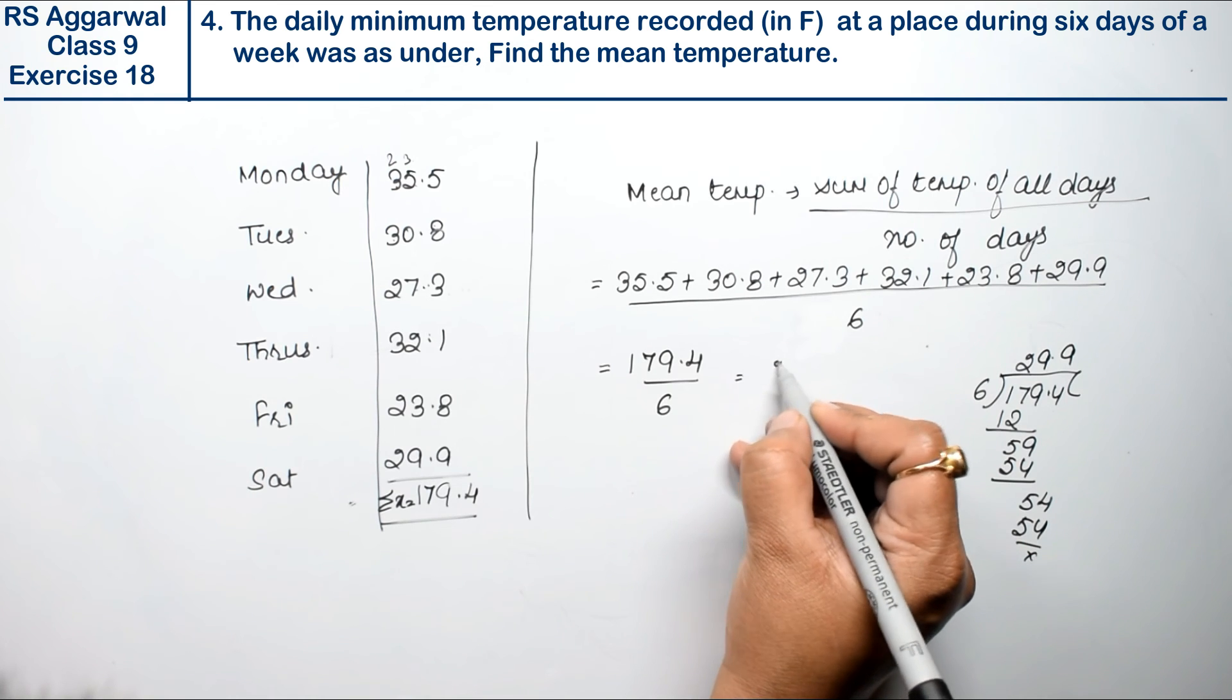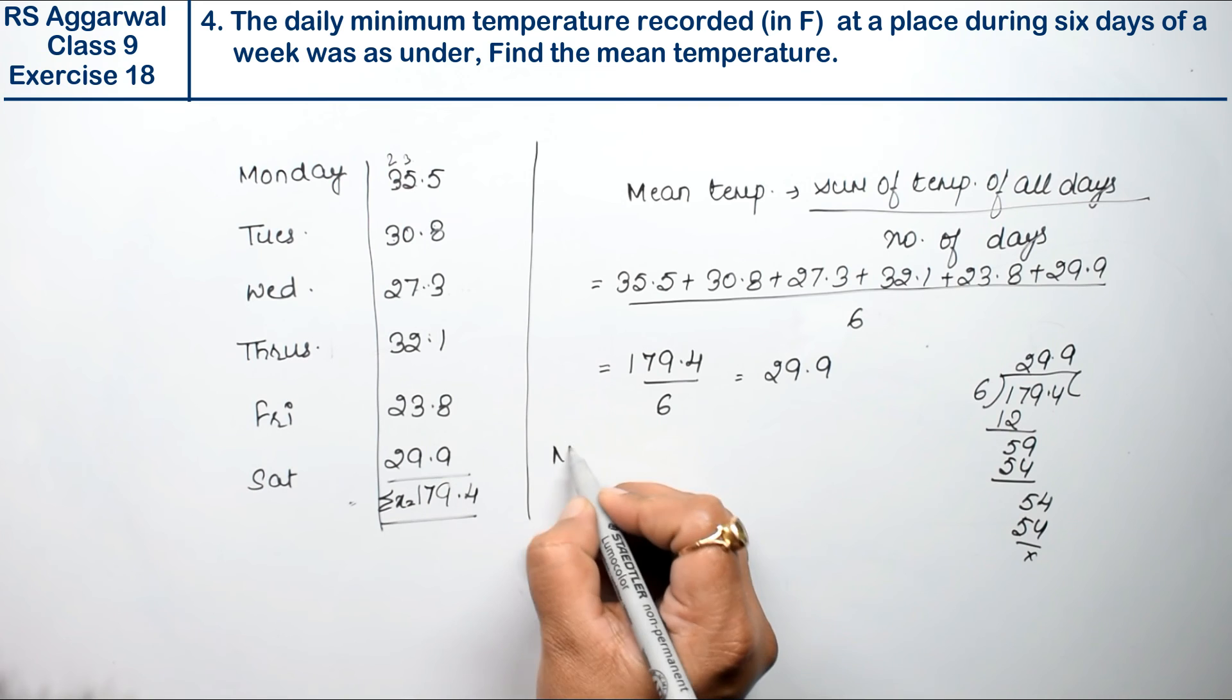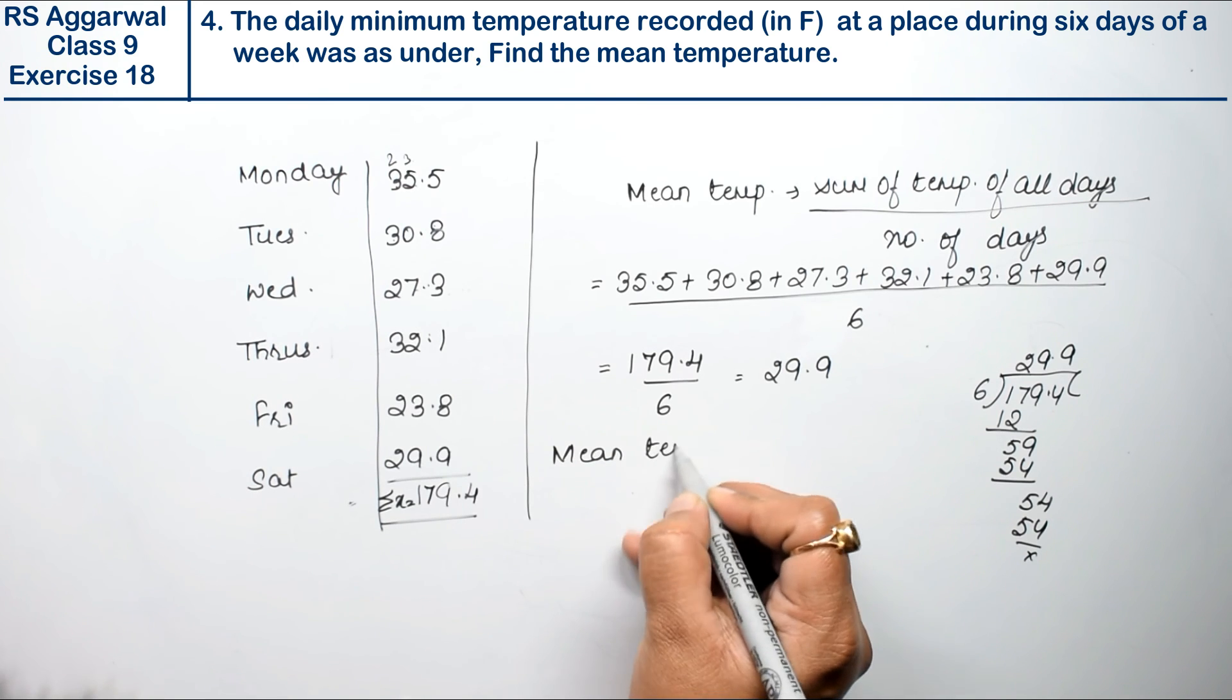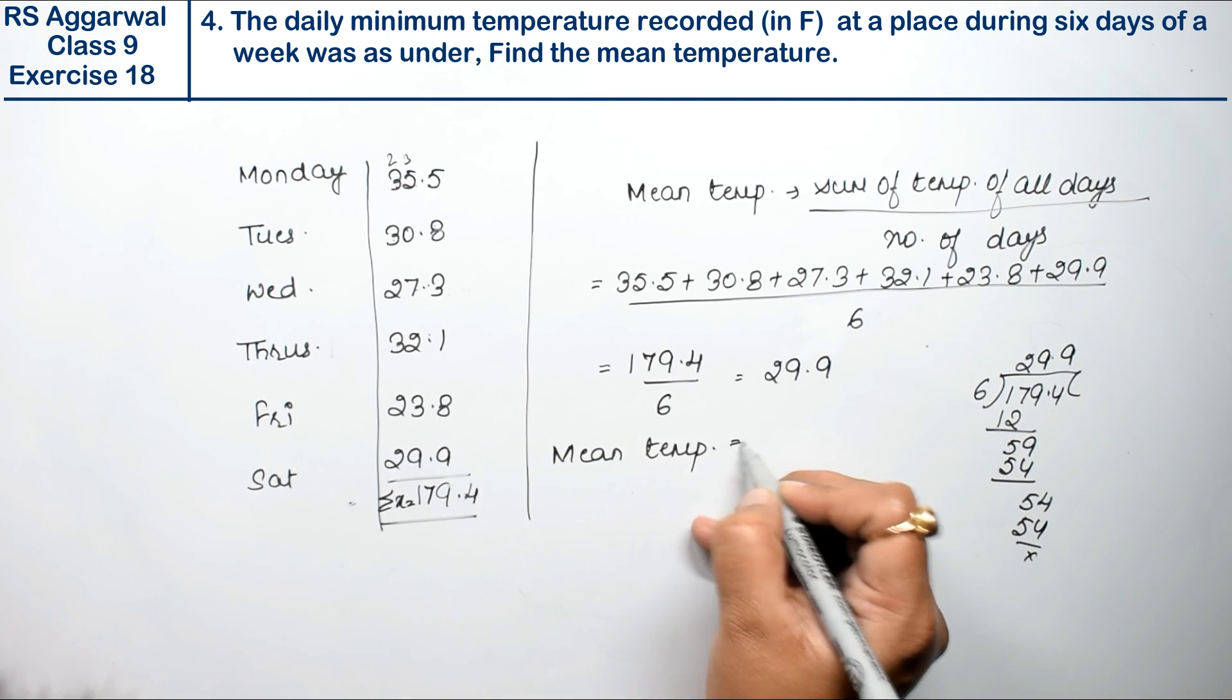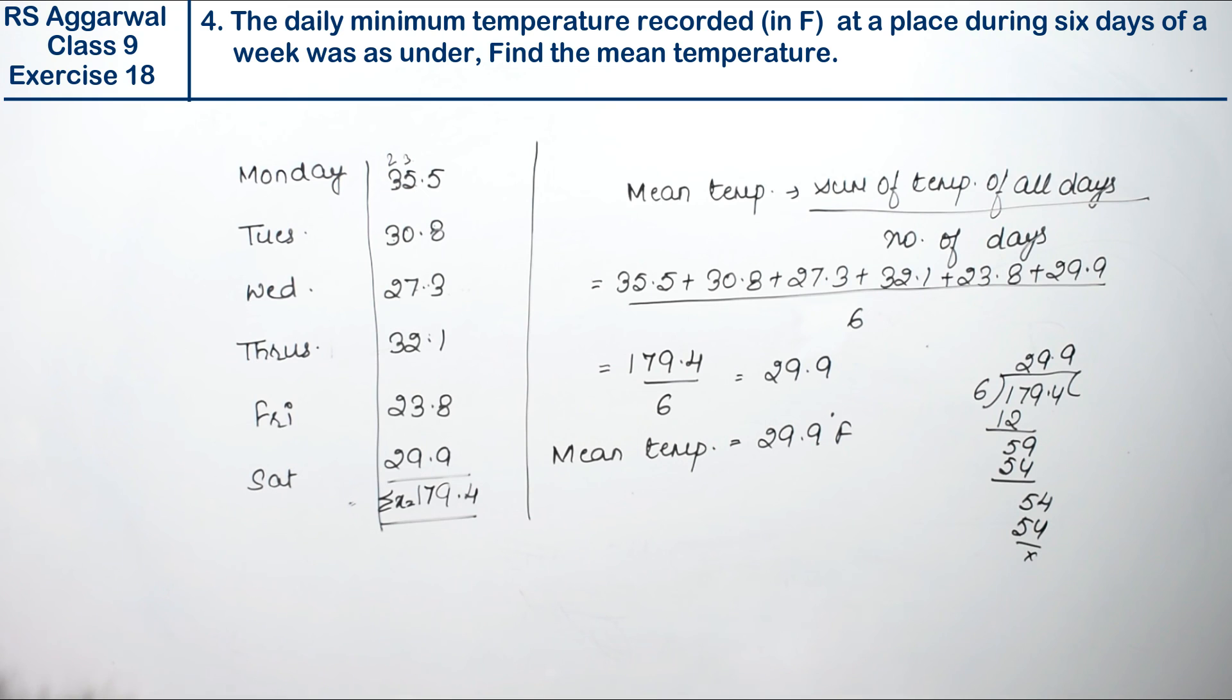Toh answer kya aaya mean temperature? Twenty nine point nine degree Fahrenheit. Toh mean temperature is equals to twenty nine point nine degree Fahrenheit. Because Fahrenheit is the answer.